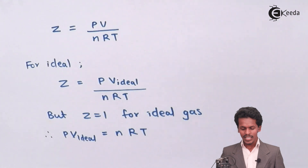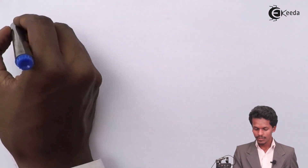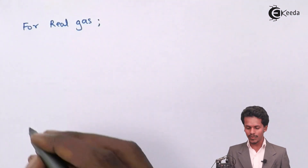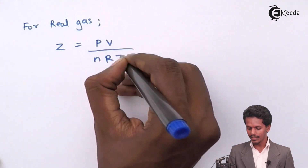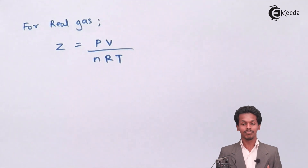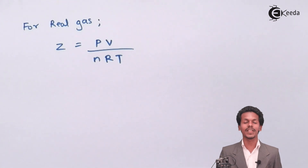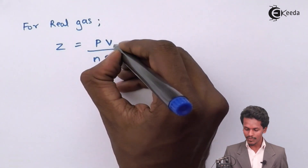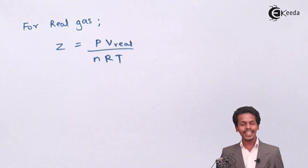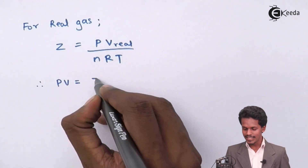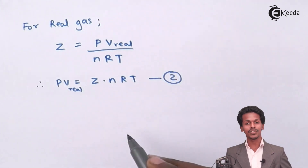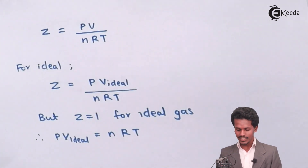Now talking about real gases: for a real gas, the compressibility factor Z equals PV divided by nRT. In this case the volume can be reduced, because in real gases the gas can be compressed. The intermolecular force of attraction can be stronger when we try to compress those gas molecules, or when we increase the pressure. So for real gases, PV equals ZnRT. I am keeping this as equation 2, and the ideal gas equation as equation 1.